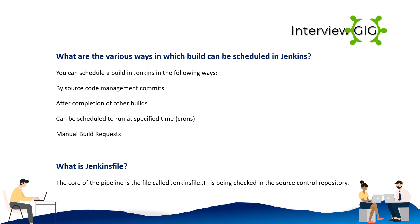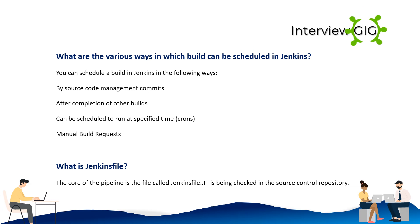What are the various ways in which a build can be scheduled in Jenkins? You can schedule a build in Jenkins in the following ways: by source code management commits, after completion of other builds, scheduled to run at a specified time using crons, or via manual build requests.